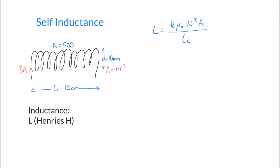At this point let's return to our original inductance formula: L equals k times mu-naught times N squared times A over Lc. One thing we glossed over was the term k, the relative permeability. In our original calculation we left k as 1, because the relative permeability relates to the core of the inductor.